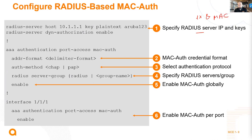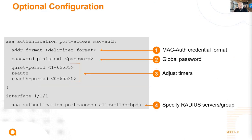Key configuration steps include: agreeing on the MAC authentication credential format, the protocol (PAP or MS-CHAP), the RADIUS group, enabling MAC authentication globally, and enabling MAC authentication on each interface that needs to authenticate clients using MAC address.